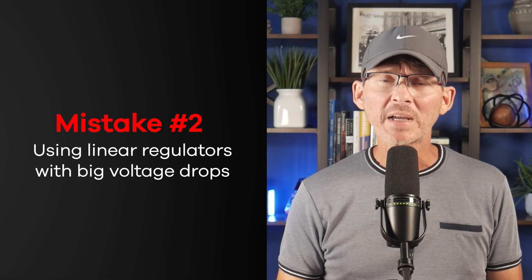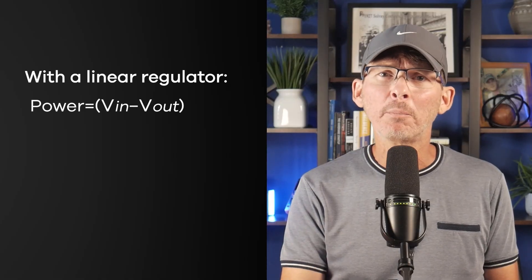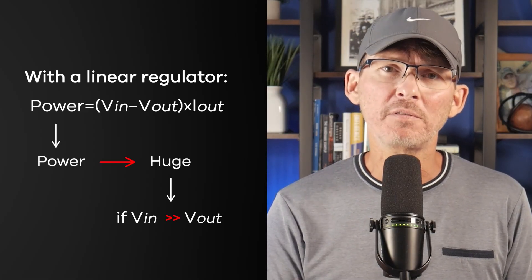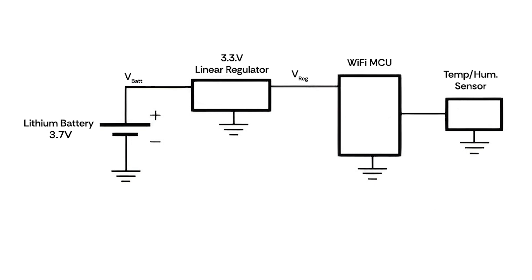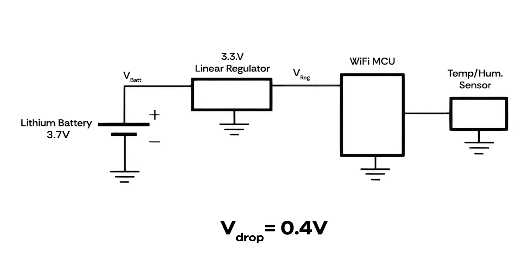Mistake number two is using linear regulators with big voltage drops. Linear regulators are simple but they waste any excess voltage as heat. The bigger the voltage drop across the regulator, the more energy you burn and the more heat you create. With a linear regulator, the power loss is simply the voltage difference between the input and the output multiplied by the output current. That loss becomes huge if V-in is much higher than V-out, especially at higher currents. For example, powering a 3.3V system from a 3.7V lithium battery gives only a 0.4V drop — about 89% efficient at 100mA. Not ideal, but usually tolerable.